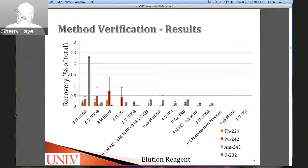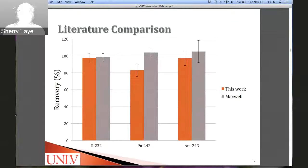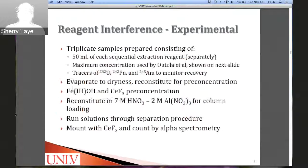The only exception is uranium appearing in the 3 M nitric strip, which is actually a TEVA cleaning step. Any uranium not passing through to TRU and sticking to TEVA gets an extra cleaning step — we see almost 2.5% of uranium recovered this way, which is beneficial. The literature comparison shows our results are in good agreement with Maxwell et al., except for plutonium, which will need to be investigated.